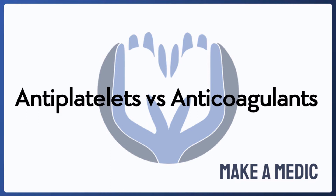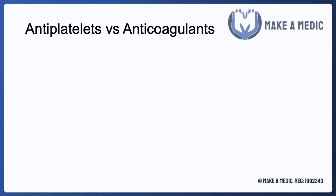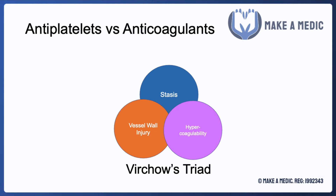The distinction between these two classes can all be explained by a diagram that you would likely have encountered within the first couple of years of medical school, and that is Virchow's triad. Virchow's triad is a schematic which essentially shows the three main factors that contribute to the formation of a thrombus, and those three factors are stasis — so blood not flowing efficiently — vessel wall injury, and also hypercoagulable states.